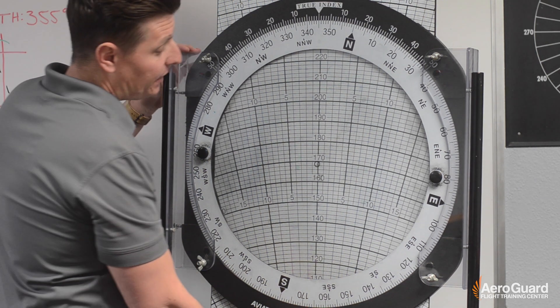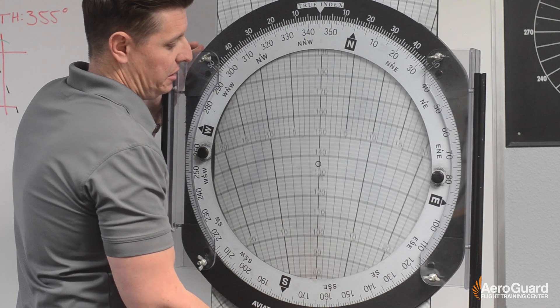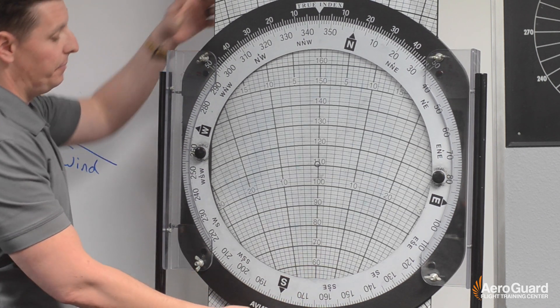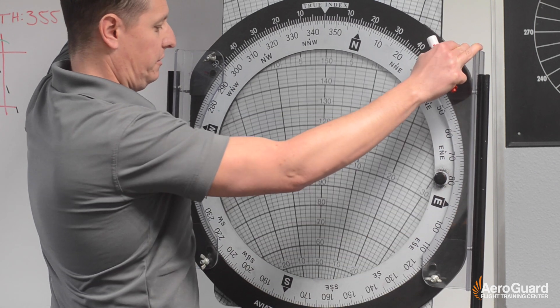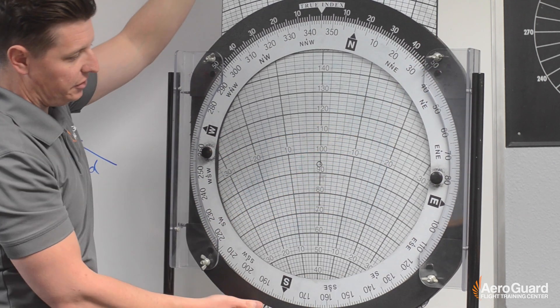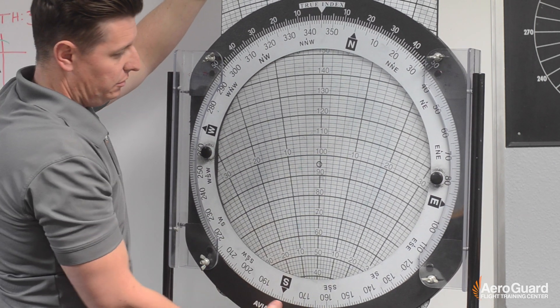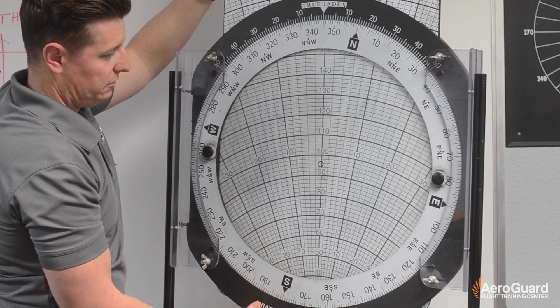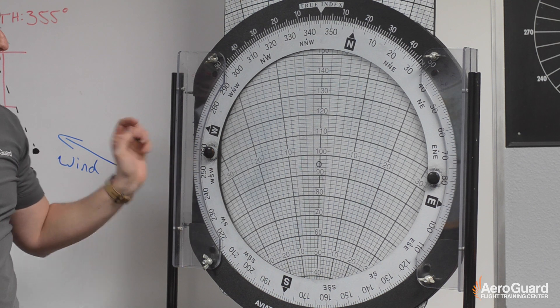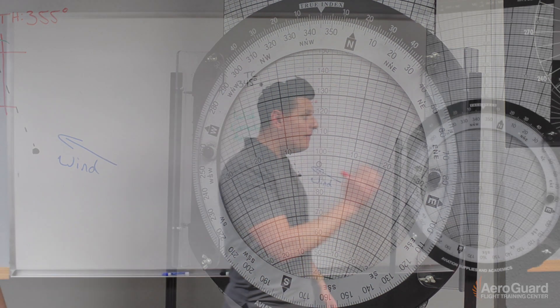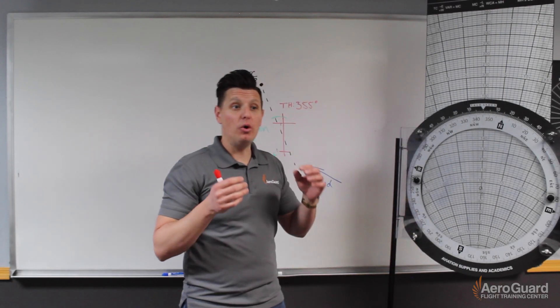Next, we're going to slide this up until our ground speed is under center. In this case, our ground speed was 95 knots. So as you see here, we have about 95 knots under this center mark.